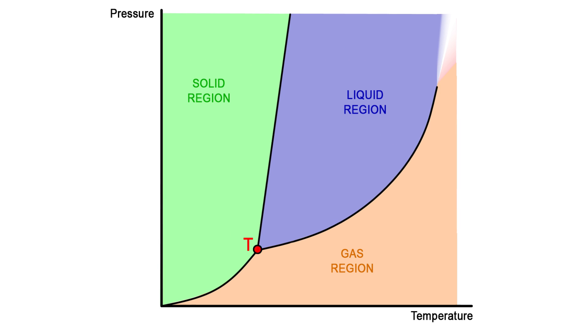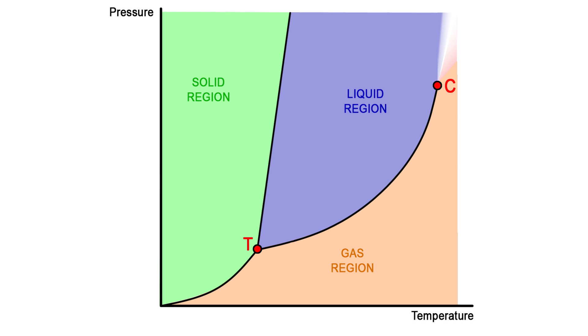The point T is known as the triple point, where solid, liquid, and gas coexist. C is known as the critical point, because at temperatures and pressures above this you can't have liquids.